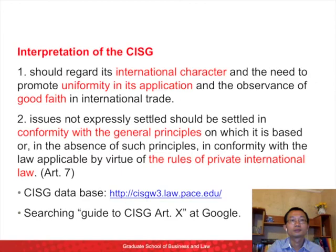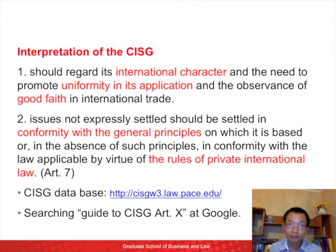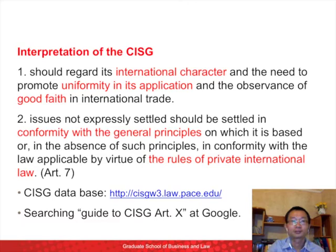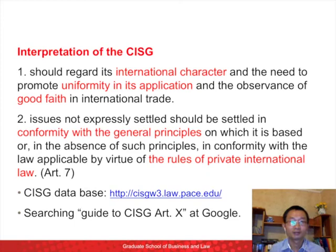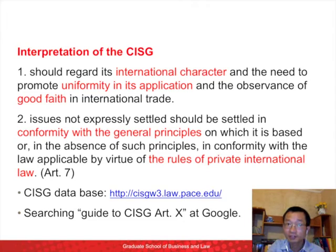Many terms of the Convention are interpreted differently in different countries. The Convention requires that interpretation should adhere to three factors: international character, uniformity in its application, and good faith. All of them are quite vague and general. What is international character? How to ensure uniformity? There is no answer to these questions. All parties would claim good faith in trading. In particular, the Convention states that interpretation should conform to general principles, but there is no provision for such general principles in the Convention at all.